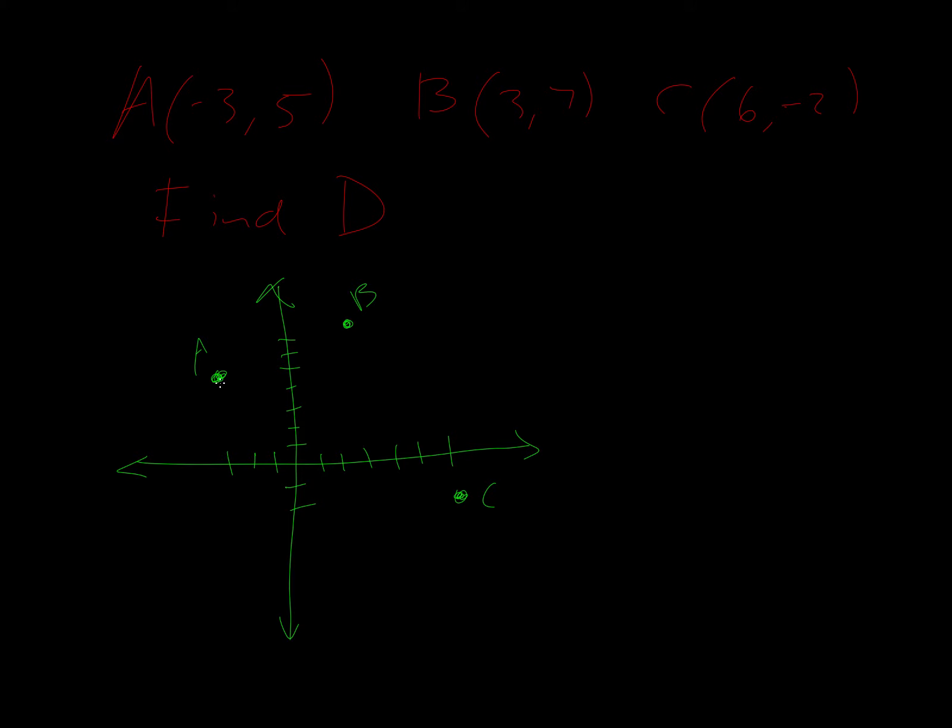We connect those dotted. Okay, so we don't really know where D is. We know about where it's going to be, it's going to be around here. But we want to find the exact value of that. Okay, so what we're going to do, we're going to approach this by finding slope.